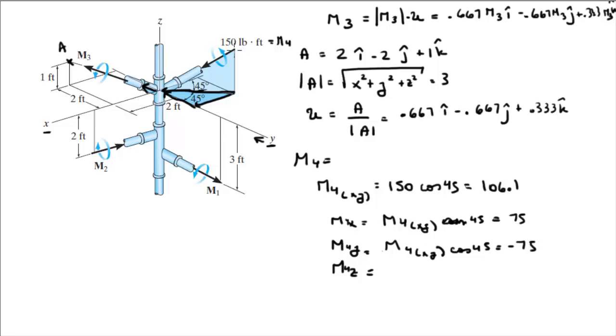And the z is this component right here, which is given by the magnitude, the whole magnitude of M4, not the projection, which is 150, times the sine of 45. And it comes out to be negative 106.1. Remember, it's negative because it's going down. So the Cartesian vector form of M4 is equal to 75 positive minus 75 in the j minus 106.1 in the k.